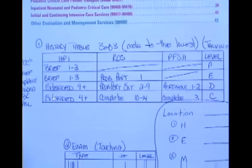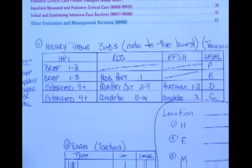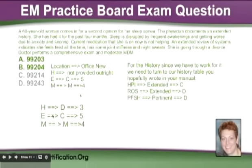Since extended on the HPI shows up on both levels, we always give them the higher one — the most credit we can for what they documented — so the HPI gets a C. The extended ROS only shows up at the D row, so they get a D. The pertinent PFSH gets a D. When you put that all together, since this is a 3-of-3 table, the lowest wins. The lowest here is detailed. So now where we had 'not provided outright,' we figured it out — it's a D, it's detailed. Turning to 99203 and 99204, when it's 3-of-3 we code to the lowest. The lowest between level 3, 4, and 5 is level 3. So the answer for this case is 99203.